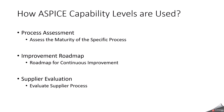The next method is improvement roadmap. Organizations can use the ASPICE levels as a roadmap for continuous improvement, moving from level 1 to level 5. The next one is supplier evaluation. Automotive OEMs often use ASPICE to evaluate their supplier processes. Suppliers that meet higher ASPICE levels are often preferred because they demonstrate a higher level of process maturity, reliability, and capability to deliver quality products.